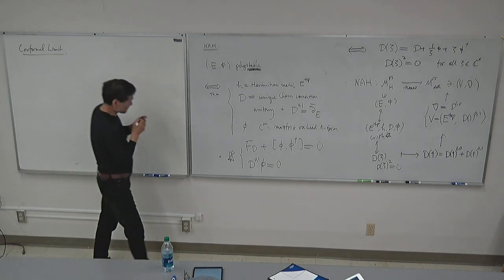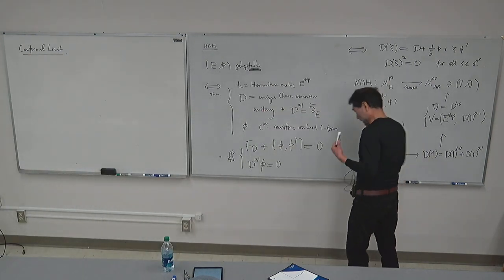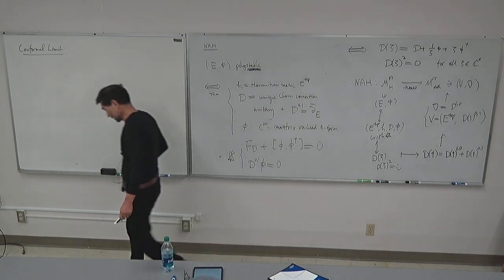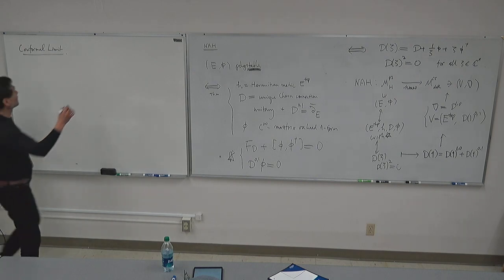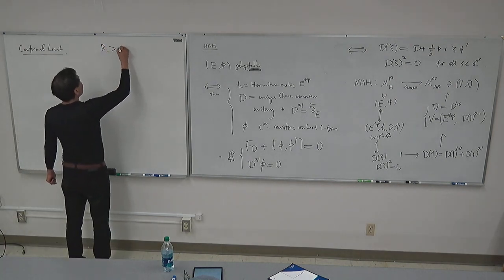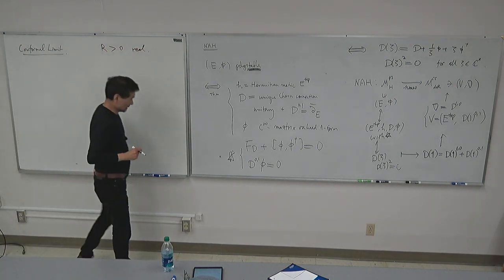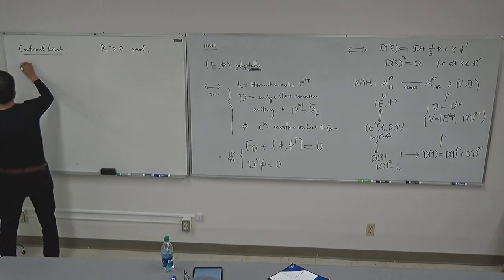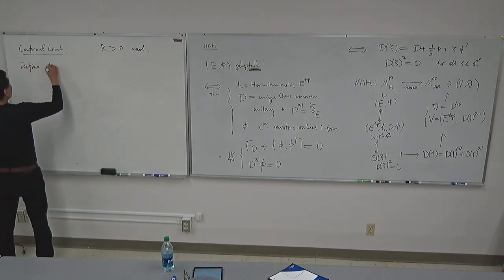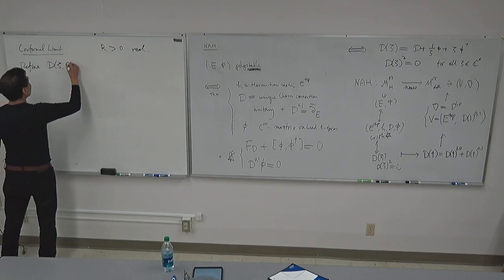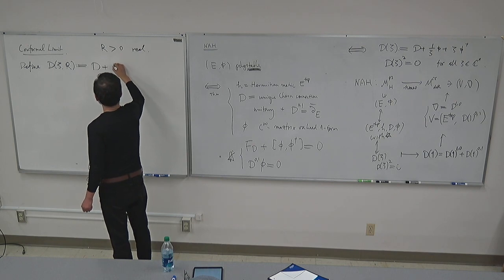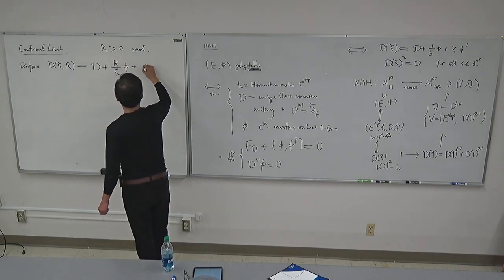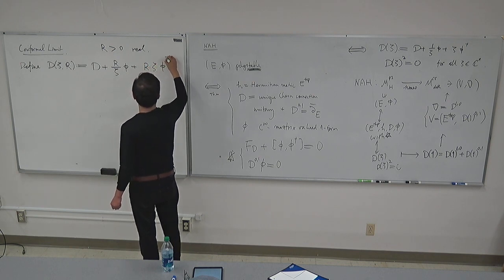It comes from N=2 supersymmetric four-dimensional theory, dimensionally reduced by one to three dimensions. There is a real parameter r. Define D_{ζ,r} to be the same context D plus (r/ζ)φ plus r·ζφ†. The definition: ζ is the same as before. They impose the third condition D_{ζ,r} squared equals zero.